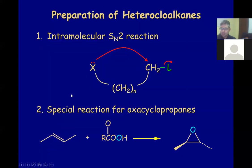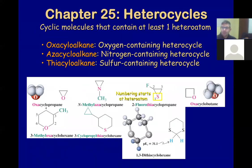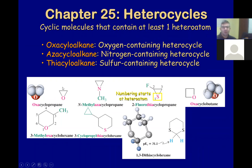A note on naming: if you have oxygen, it's 'oxa'; nitrogen is 'aza'; and sulfur is 'thia'. So oxacyclopropane has three atoms — propane because it has three atoms, cyclo because it's cyclic, and oxa because it contains oxygen.